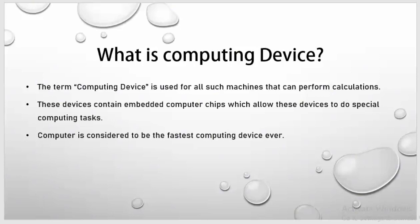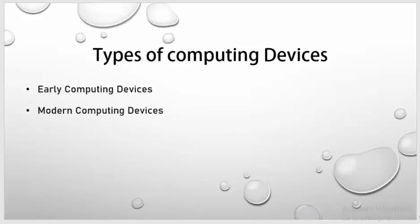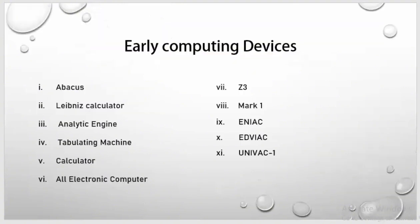Now let's discuss types of computing devices. Basically there are two types: first one is early computing devices and the second one is modern computing devices. Early computing devices include: Abacus, Leibniz Calculator, Analytical Engine, Tabulating Machine, Calculator, All Electronic Computer, Z3, Mark 1, ENIAC, EDVAC, and UNIVAC 1.